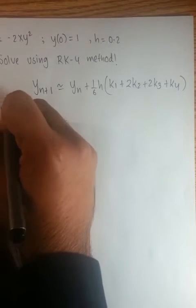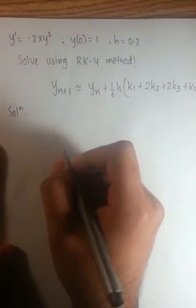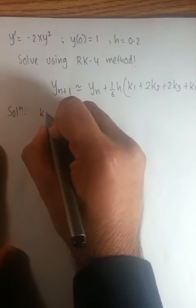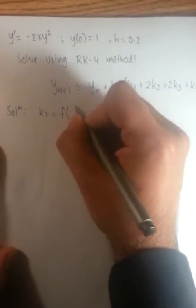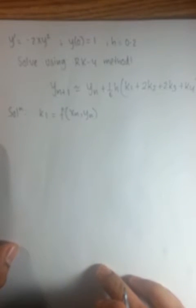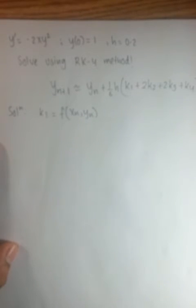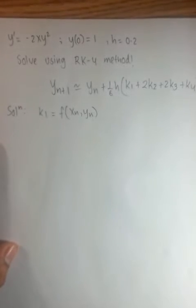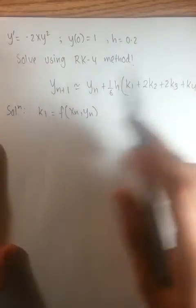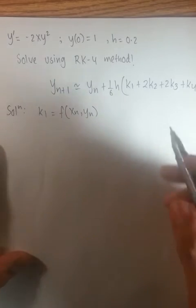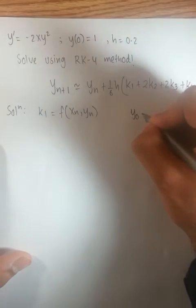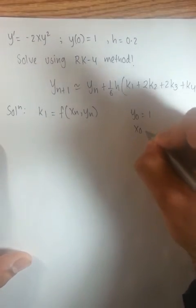So we would start the solution by finding the k1, k2, k3, and k4 values. k1 is equal to function at xn, yn. What exactly is xn and yn? These are the values that can be found out by plugging in the initial conditions of x and y into the main function. And the initial conditions that are given to us is y0 is equal to 1 and x0 is equal to 0.